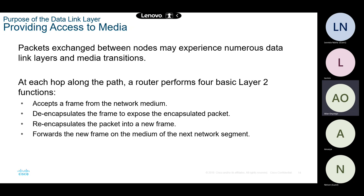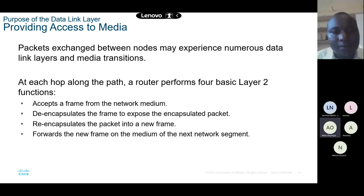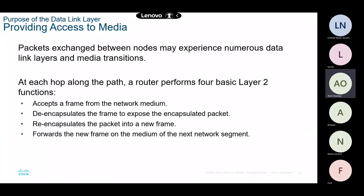The router has a special table called a routing table, which is what makes the router do its job. The routing table has different routes the router can use to send a packet. The router is the only device that can connect one network to another. The router de-encapsulates the frame to view the packet and needs to see the source and destination IPs — especially the destination IP — to know where to forward it.